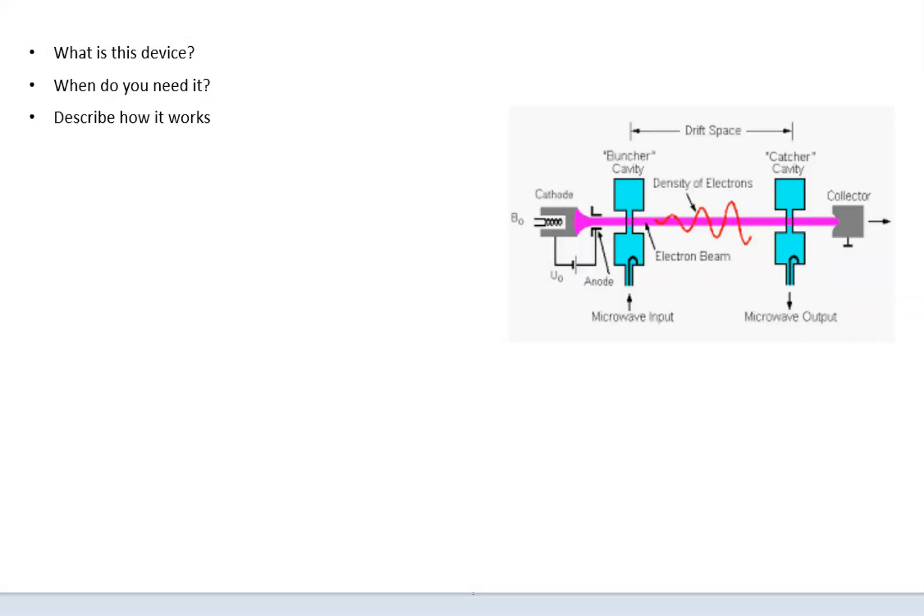Alright, so next we're going to cover a very important piece of equipment in a linear accelerator. You may see a diagram something similar to this. Be asked, what is this device? When do you need it? And describe how it works.